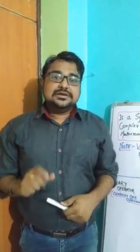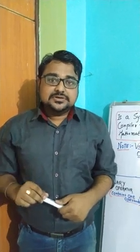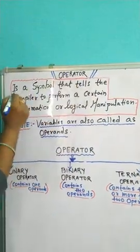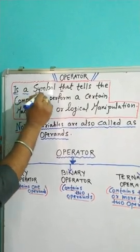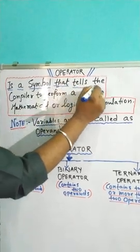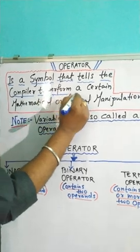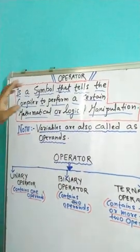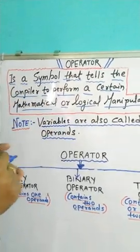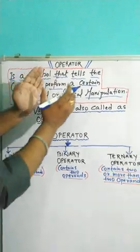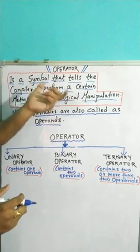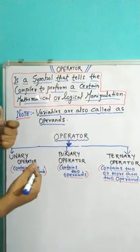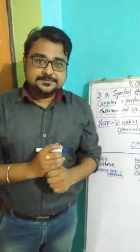Good morning everyone. Today we will learn about operators and the types of operators. The definition of operator is: an operator is a symbol that tells the compiler to perform a certain mathematical or logical manipulation. We use operators for mathematical and logical operations.